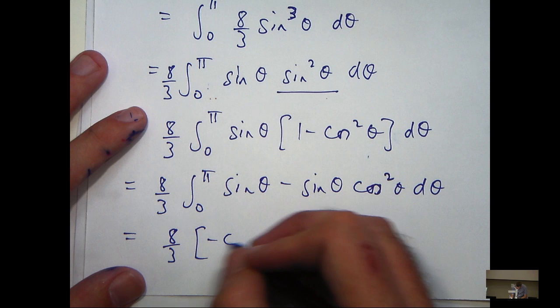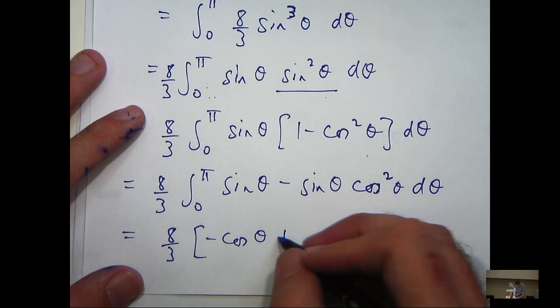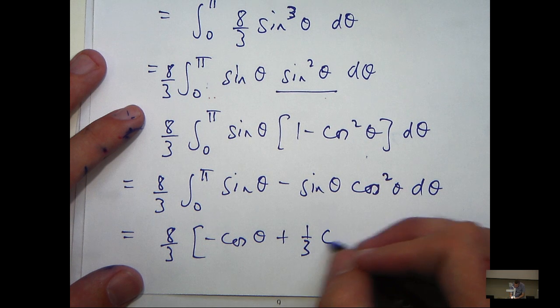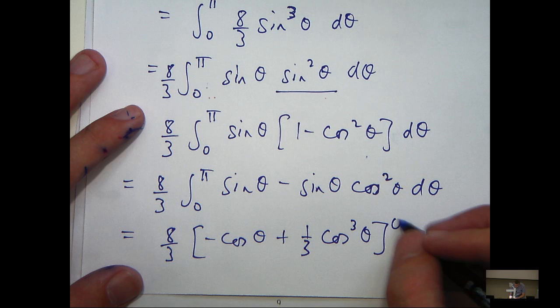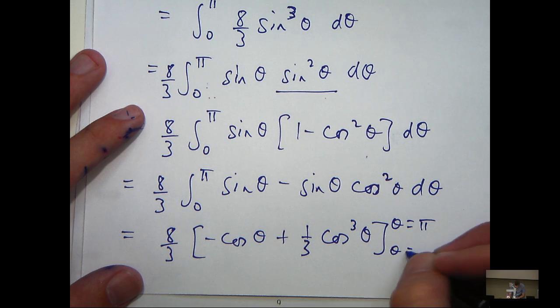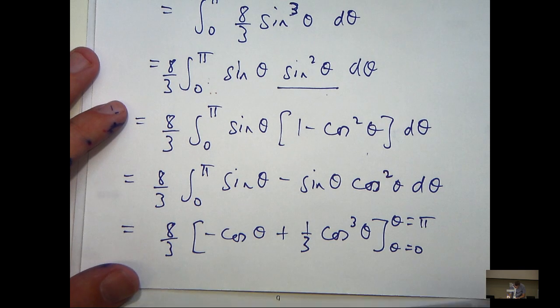So, we're going to get something like this. This is going to go to positive 1 third cos cubed theta.